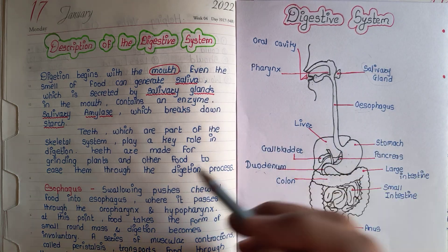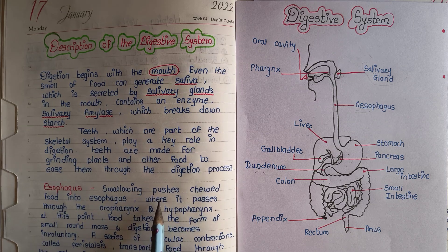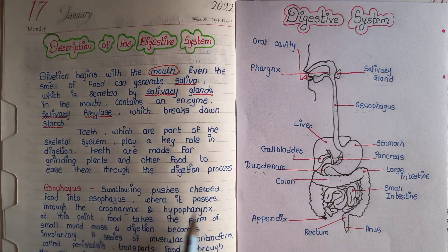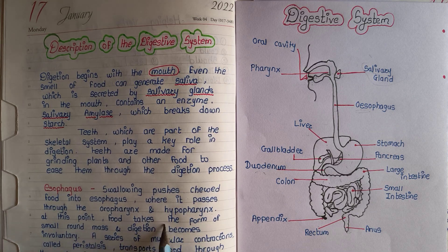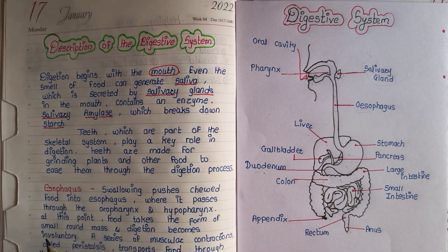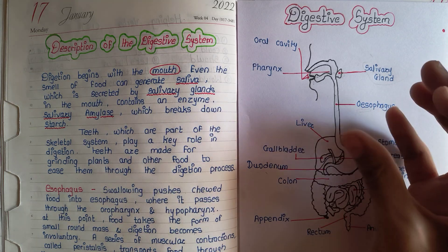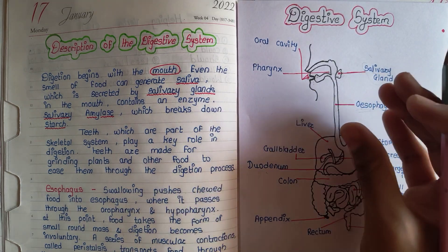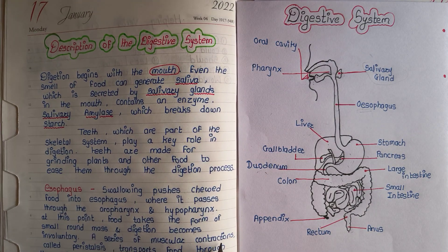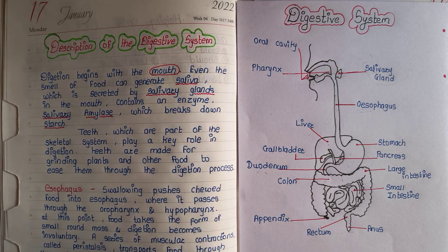The esophagus is just a tube. Swallowing pushes the food into the esophagus, where it passes through the oropharynx and hypopharynx. At this point, food takes the form of a small round mass, and digestion becomes involuntary. A series of muscular contractions called peristalsis transports food through the rest of the system.